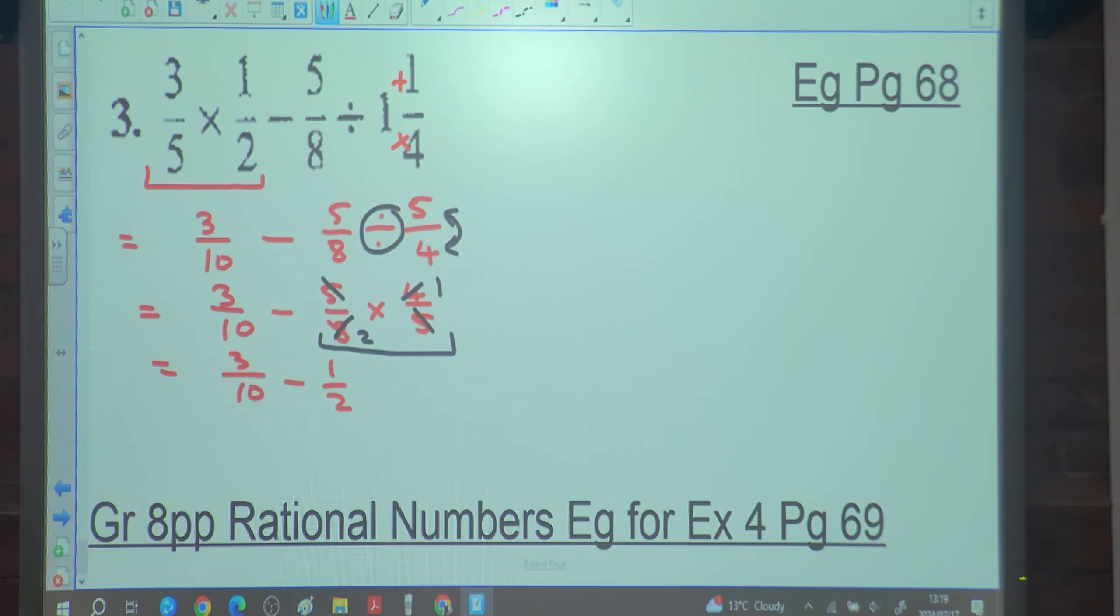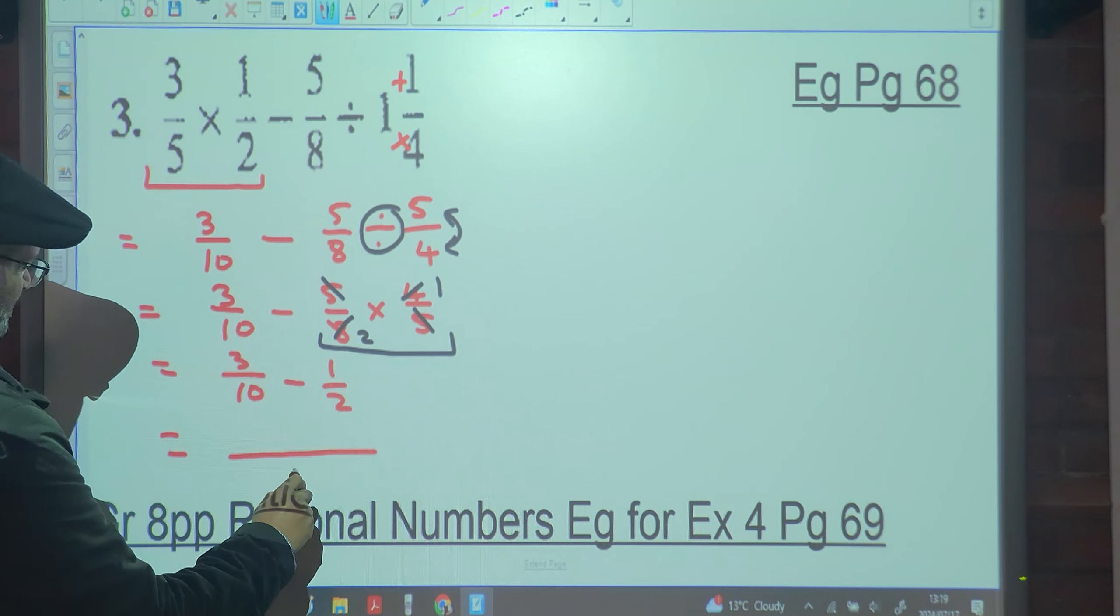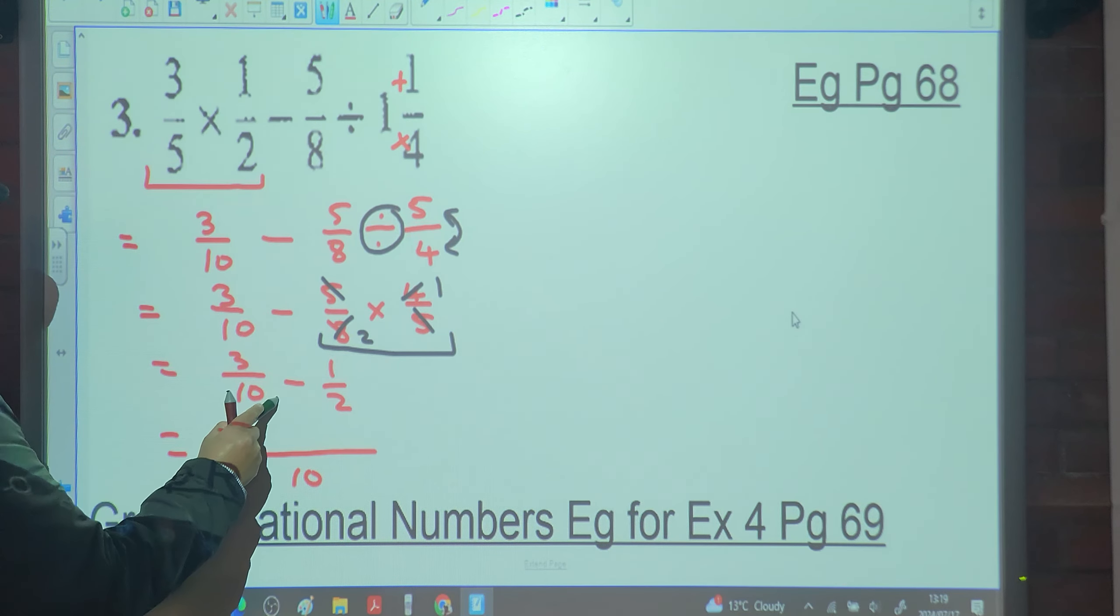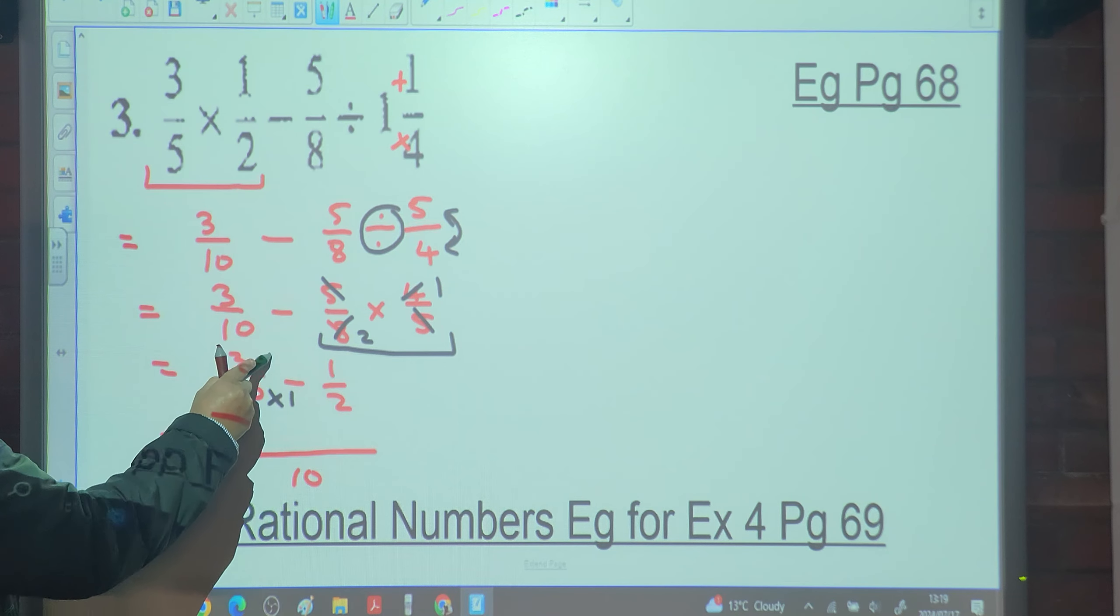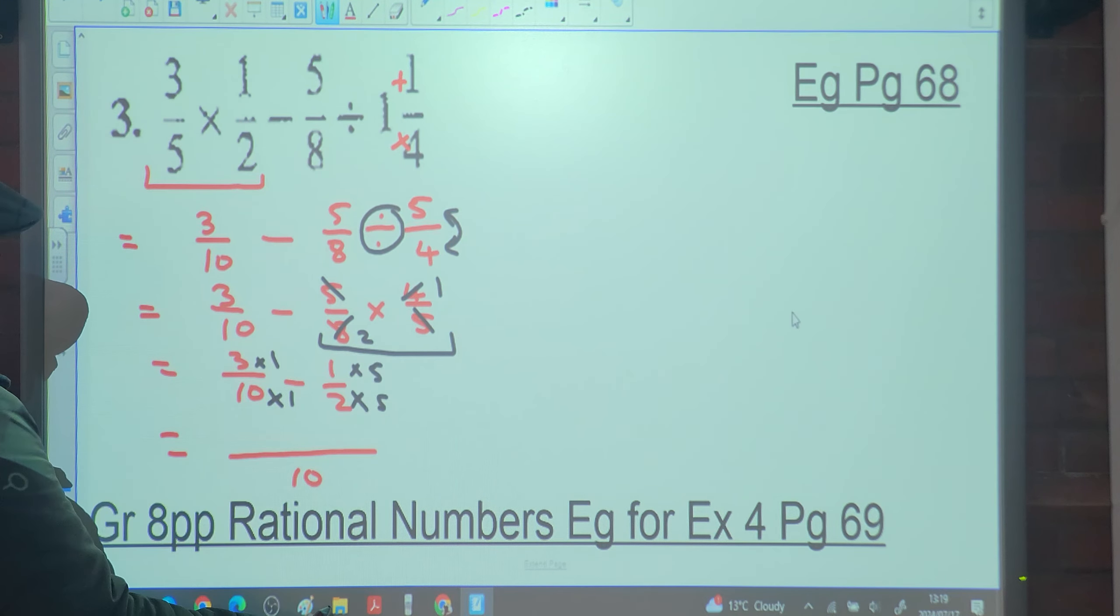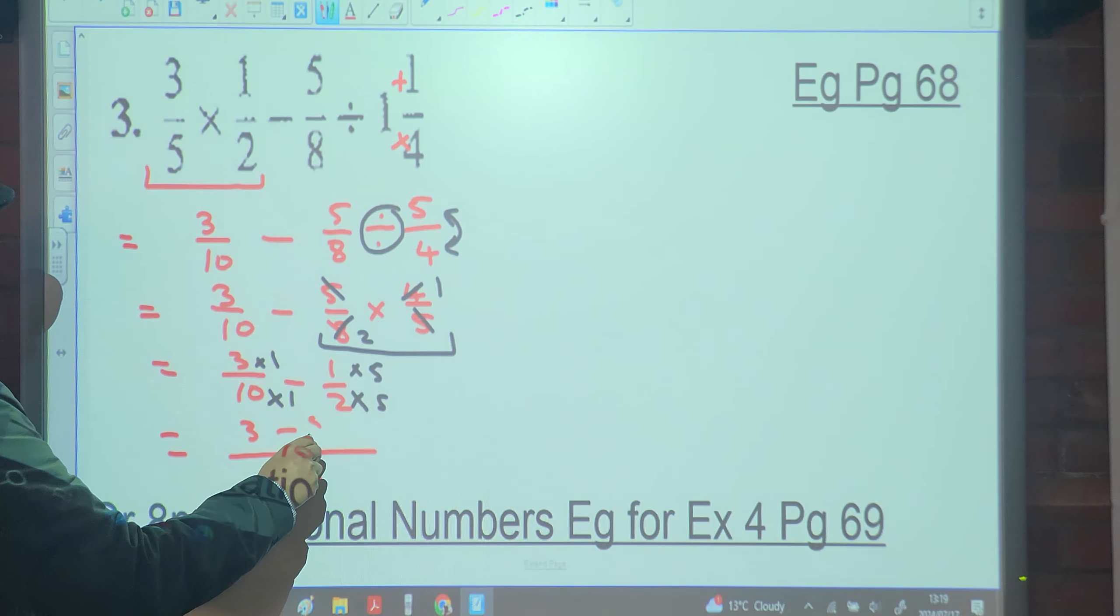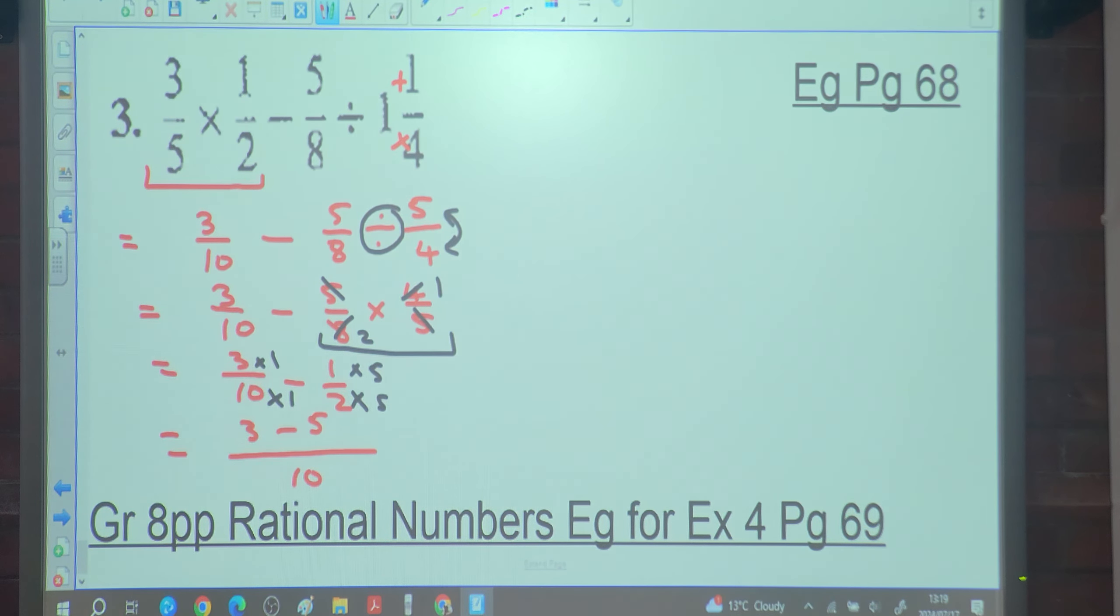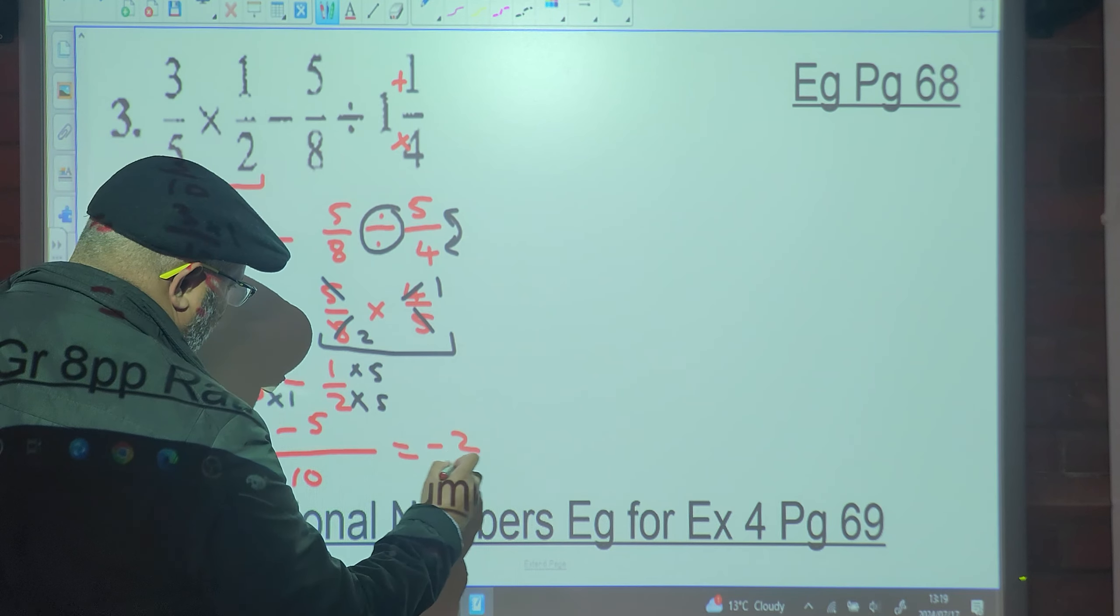Now what? LCD. What's your LCD? Ten. So this one's multiplied by five. It's going to be three over ten minus five over ten. So it's three minus five over ten. What's three minus five? Negative two. So it's negative two over ten.